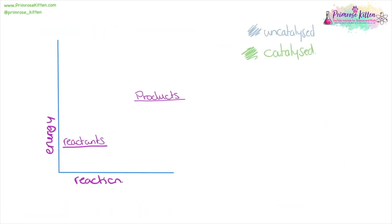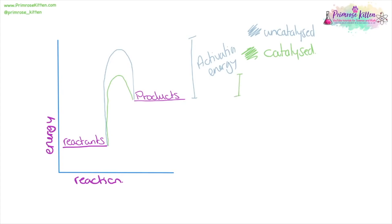Whenever we have a reaction, there's an activation energy. Instead of going straight from reactant to product, there's a hump it has to get over — that difference is the activation energy. What a catalyst does is lower the activation energy so that it's easier for the reaction to take place, making the reaction more likely to happen because there's less of a hump for it to get over.